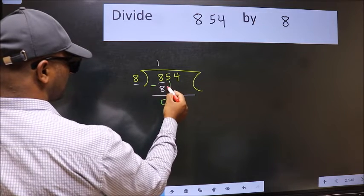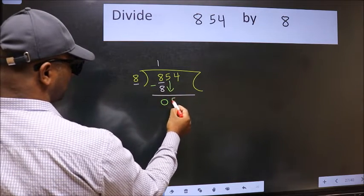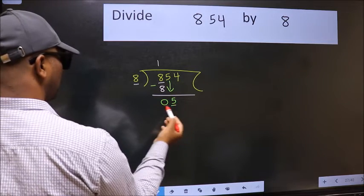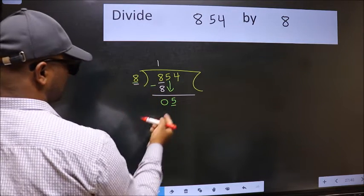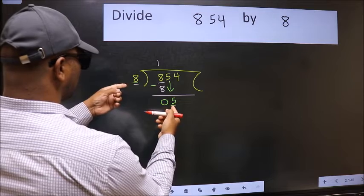After this, bring down the next number. So 5 down. Now here we have 5 and here 8. 5 is smaller than 8.